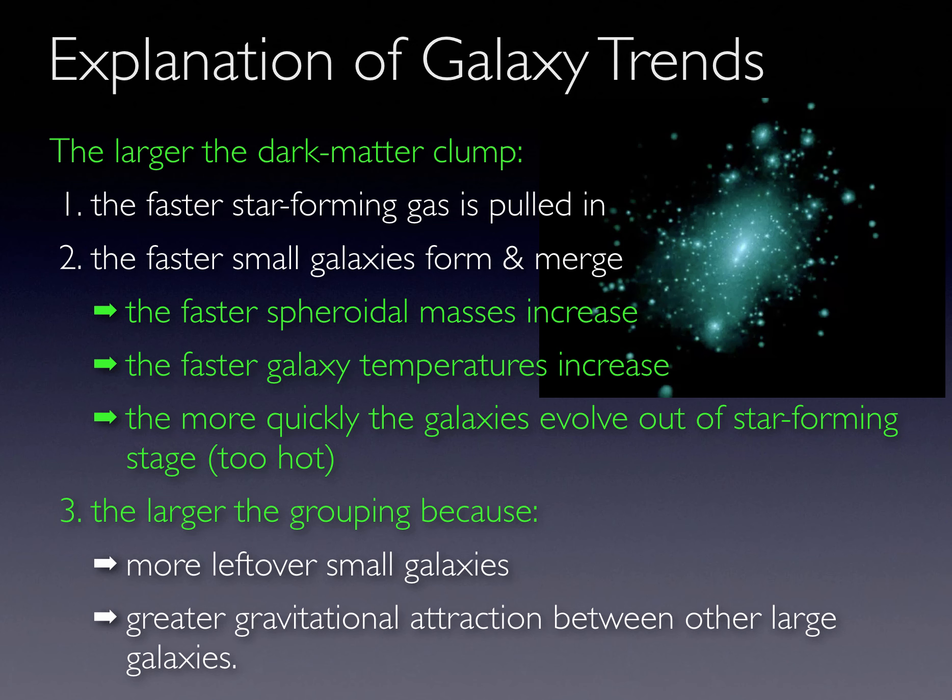The larger the dark matter clump, the faster gas is pulled in gravitationally. The more gas pulled in, the greater the number of galaxies and the greater the number of mergers. The greater the number of mergers, the larger the dark matter halo and central bulge grow in the remaining galaxies, and the more quickly those remaining large galaxies end star formation.